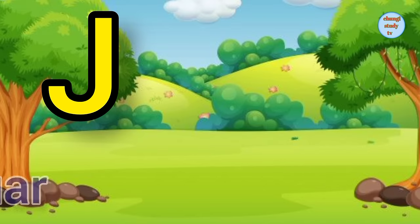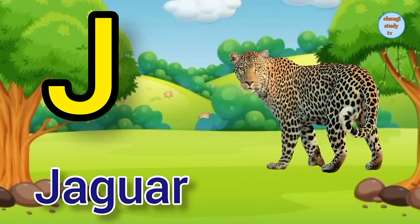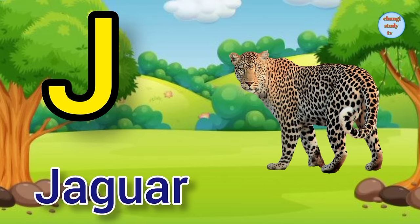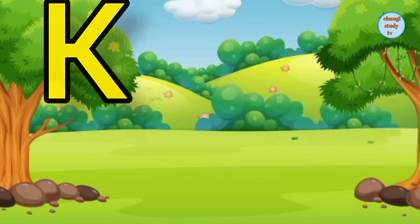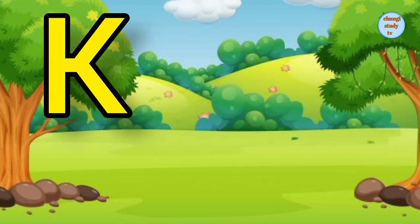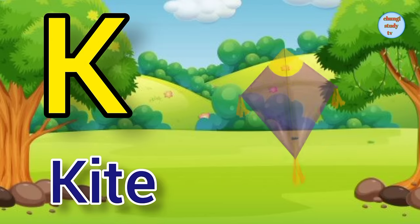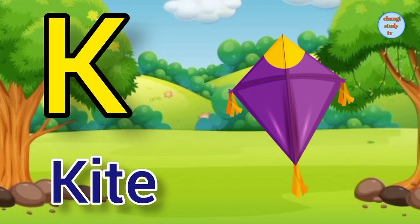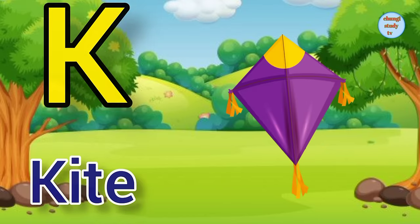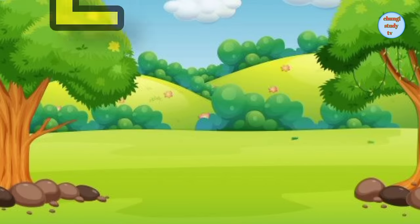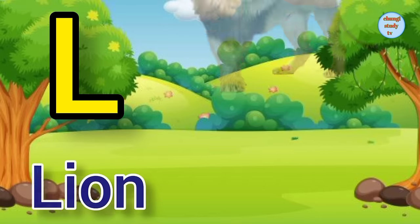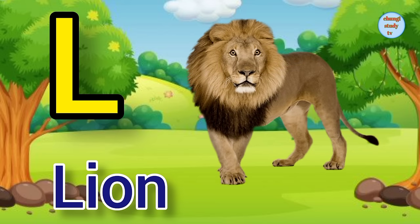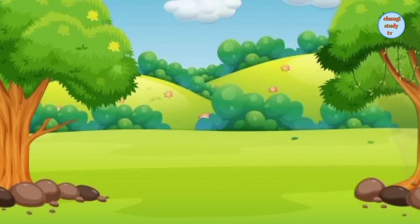J. J for jaguar, jaguar means tendua. K. K for kite, kite means patang. L. L for lion, lion means seed Y.